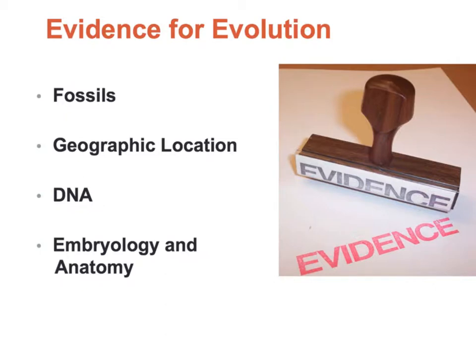Evidence for evolution — there are lots of types of evidence scientists use to support the idea of evolution. In earth science you talked about fossils and how those are used. The geographic location of those fossils is also used. DNA evidence is also used, and we're going to look at that in a lab — specifically how we can use DNA to show that organisms have basically come from a common ancestor. Embryology, the study of embryos, and anatomy — looking at similar anatomical features — also indicate that organisms were probably related.